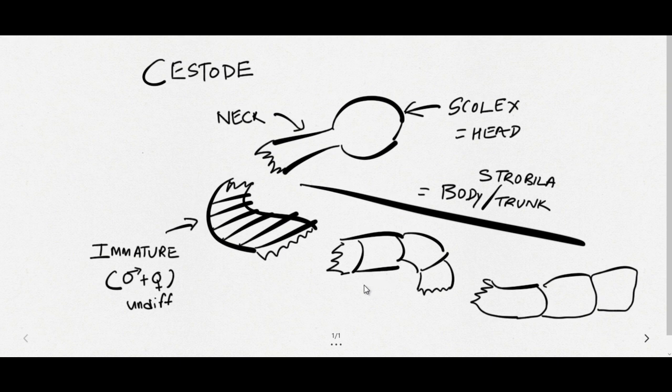The second variety is mature segments, where you can differentiate that these are the male organs and these are the female organs within a segment. And usually the male organs differentiate first. And lastly, the gravid segments, where the uterus or female reproductive organ is filled with eggs, and other organs usually atrophy or disappear.